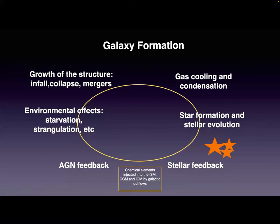The models follow the condensation of gas into the dark matter halos and then the transformation of gas into stars. For stars of different stellar masses, we include stellar evolution — for example, we follow massive stars and include stellar feedback. We take into account the production of chemical elements and the ejection of these chemical elements, together with energy, into the interstellar medium, also from supernovae Type Ia and AGBs.